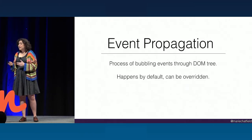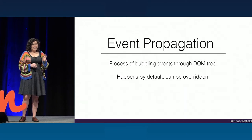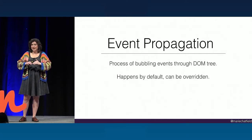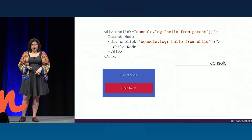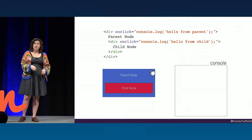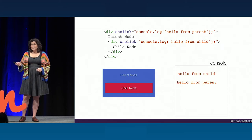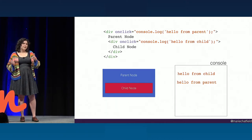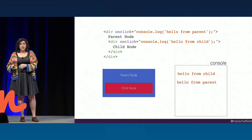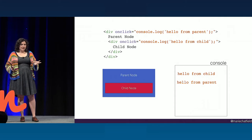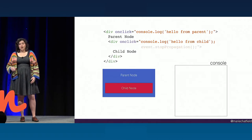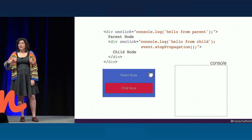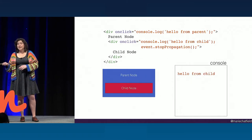That brings us to event propagation — a really important concept in the DOM. Every single parent of a node that had an event triggered on it also has a chance to respond to that same event. If we have a parent and a child node both with click listeners and we click the child, first its event listener will fire, then its parent's. This makes sense: if our user clicks exactly on an icon inside a button, we still want the button to fire without adding listeners to every child element. But there are cases when we don't want this, so we can call stopPropagation on our event — the child's listener runs, stops propagation, and nothing above it fires.